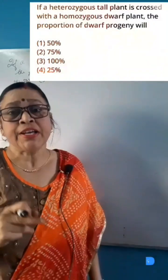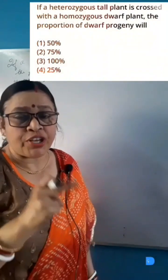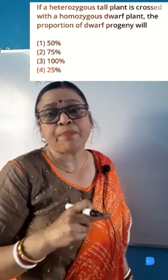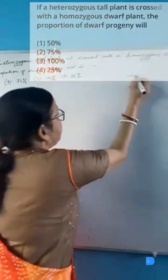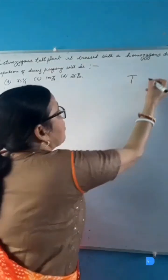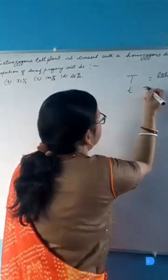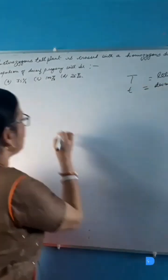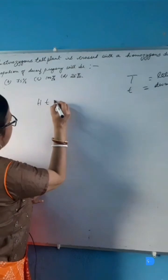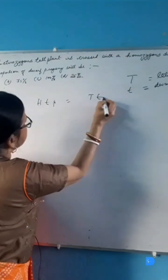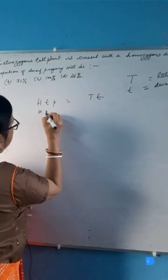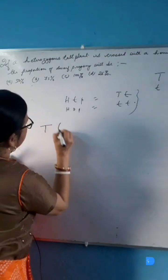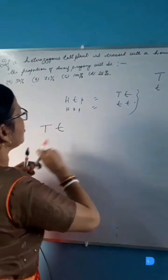A heterozygous tall plant is crossed with a homozygous dwarf plant. What is the proportion of dwarf progeny? Let capital T be the dominant trait for tall and small t be the recessive trait for dwarf. So the heterozygous tall plant will be Tt and the homozygous dwarf plant will be tt.